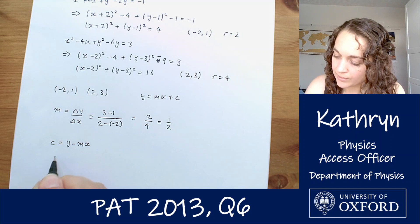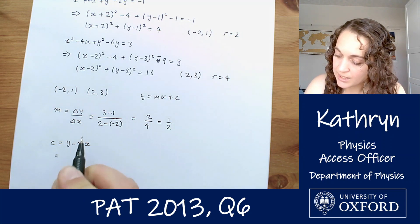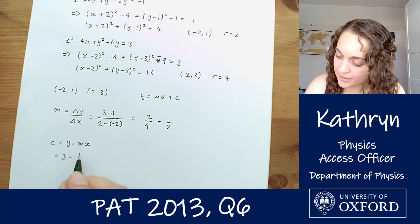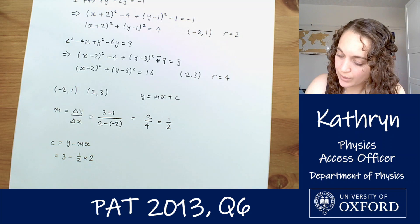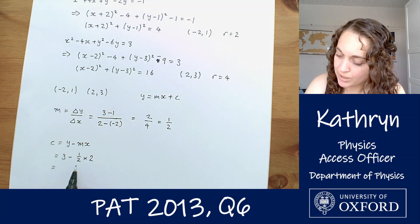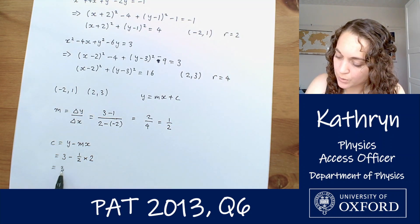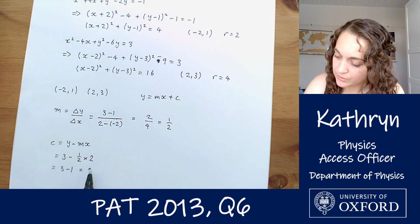So c at 2, 3 is going to be y is 3, m is a half, and x is 2. So 3 minus a half times 2 is 3 minus 1, which is 2.